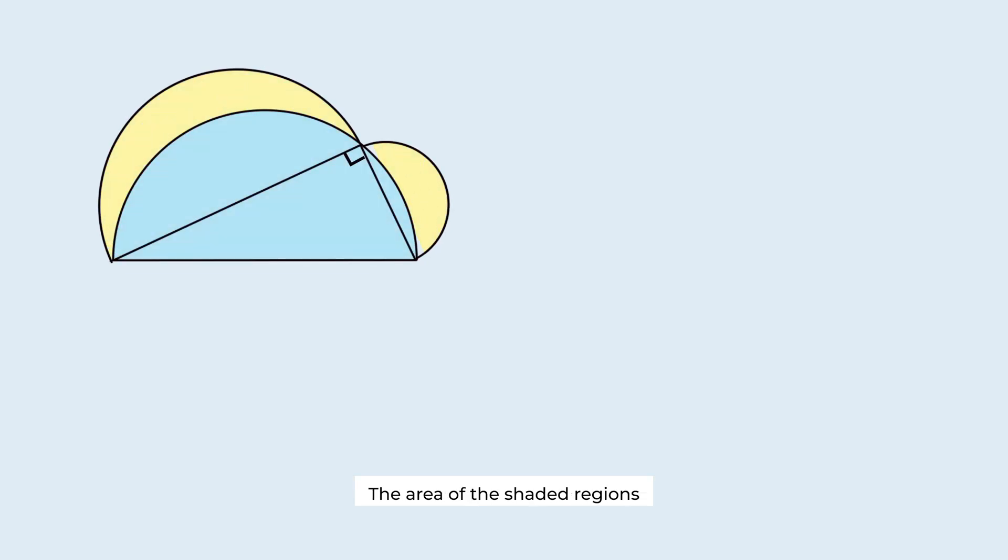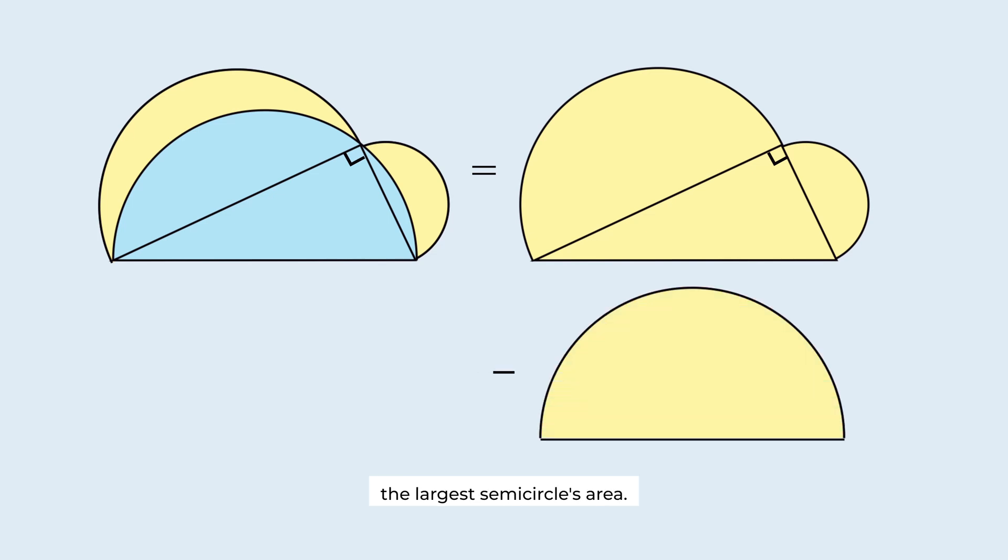The area of the shaded regions is the total area minus the largest semicircle's area. The overall shape consists of this semicircle, this semicircle, and the right triangle.